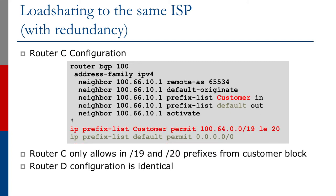Looking at the upstream configuration, it's very similar to before. We're doing the default originate so our customer gets the default route, with an outbound prefix list to let that default out to the customer. Inbound, we have a prefix list which allows the customer prefixes in. Notice the difference from the previous example: we're now allowing the slash 19 but also slash 20s — without specifying which of the two slash 20s from that aggregate. This is more flexible for the upstream provider because if the end user decides to swap around which slash 20s they're announcing on each link, the upstream provider doesn't have to make any changes. This scales much better.